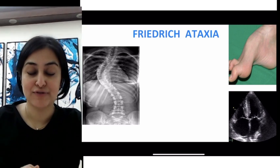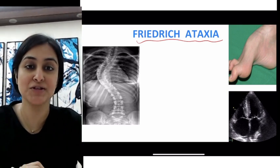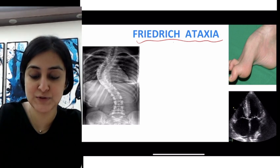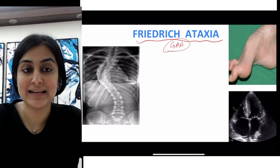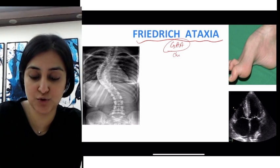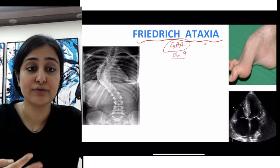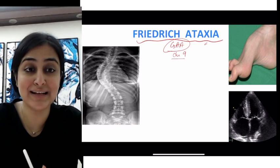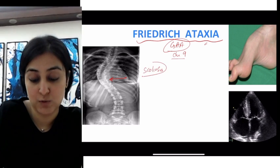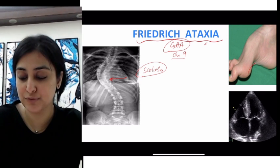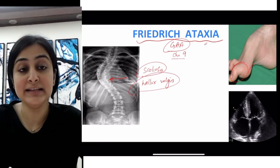Next is Friedreich's ataxia — very important. This is a trinucleotide repeat disorder. We remember this as the story of Lady Gaga: the trinucleotide repeat is GAA. When Lady Gaga was nine years old — that's chromosome 9 — she fell because she had ataxia. On further investigation, we found scoliosis, which can be a finding of Friedreich's ataxia. Apart from that, there is a prominent toe deformity called Hallux valgus.